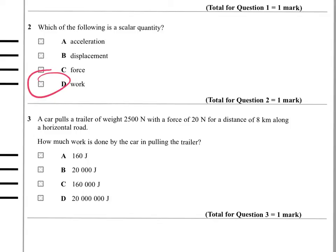Question three, a car pulls a trailer of weight 2500 newtons with a force of 20 newtons for a distance of 8 kilometers along a horizontal road. How much work is done by the car in pulling the trailer? Crucially, work is force times distance. And the crucial thing here is, which force are we talking about? It's the force acting on the trailer in the direction that it's being displaced. We need to stop and think a little bit about that.